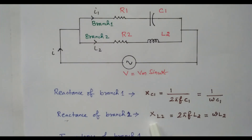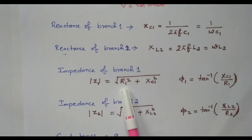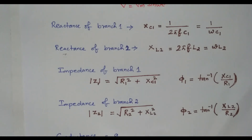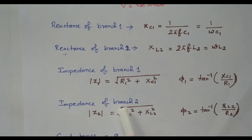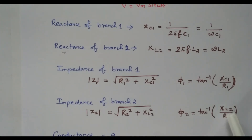The reactance of the second branch is XL2, since the second branch contains the inductor, so XL2 equals 2 pi F L2, that is omega into L2. The branch 1 capacitor is termed C1, and in branch 2 the inductor is termed L2 for simplification. Based on the reactance, we can calculate the impedance. The impedance Z1 equals the square root of R1 squared plus Xc1 squared. The phase angle phi 1 equals tan inverse of Xc1 by R1. Similarly, Z2 equals the square root of R2 squared plus XL2 squared, and phi 2 equals tan inverse of XL2 divided by R2.